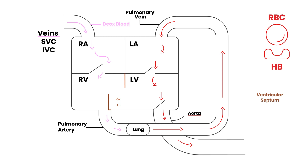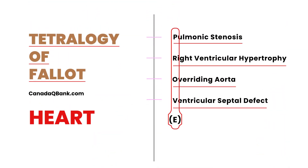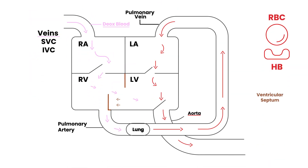Immediately, notice there's a gap. This gap — that I'm drawing arrows through — is the ventricular septal defect, or VSD. There's a defect in the ventricular septum. That's easy to understand.